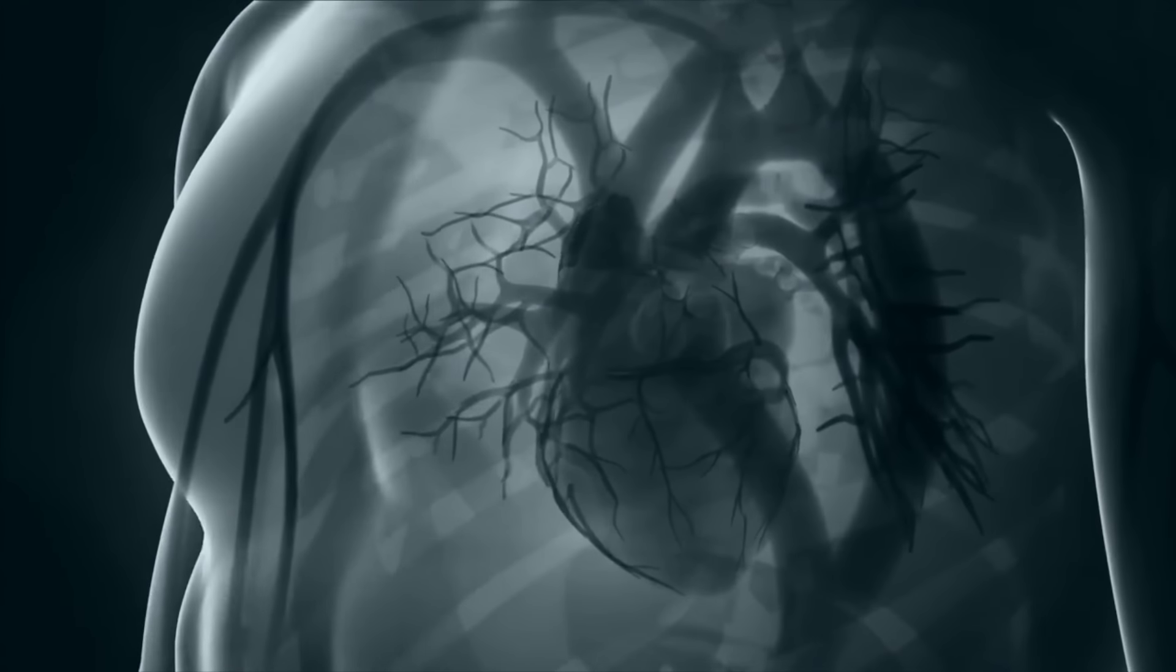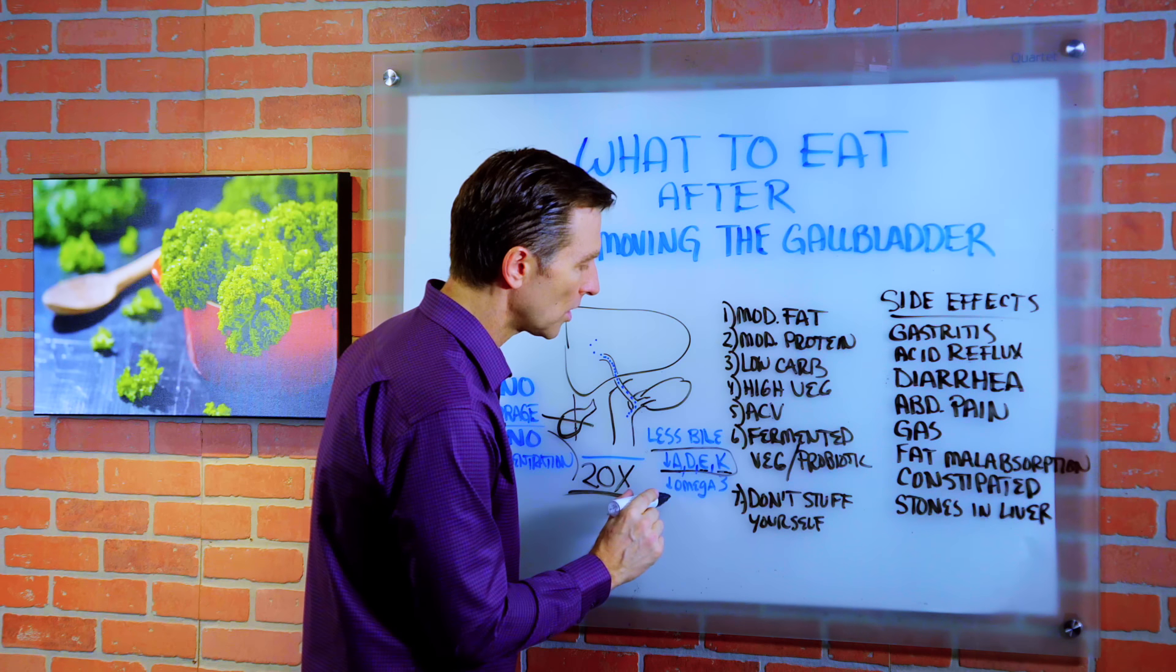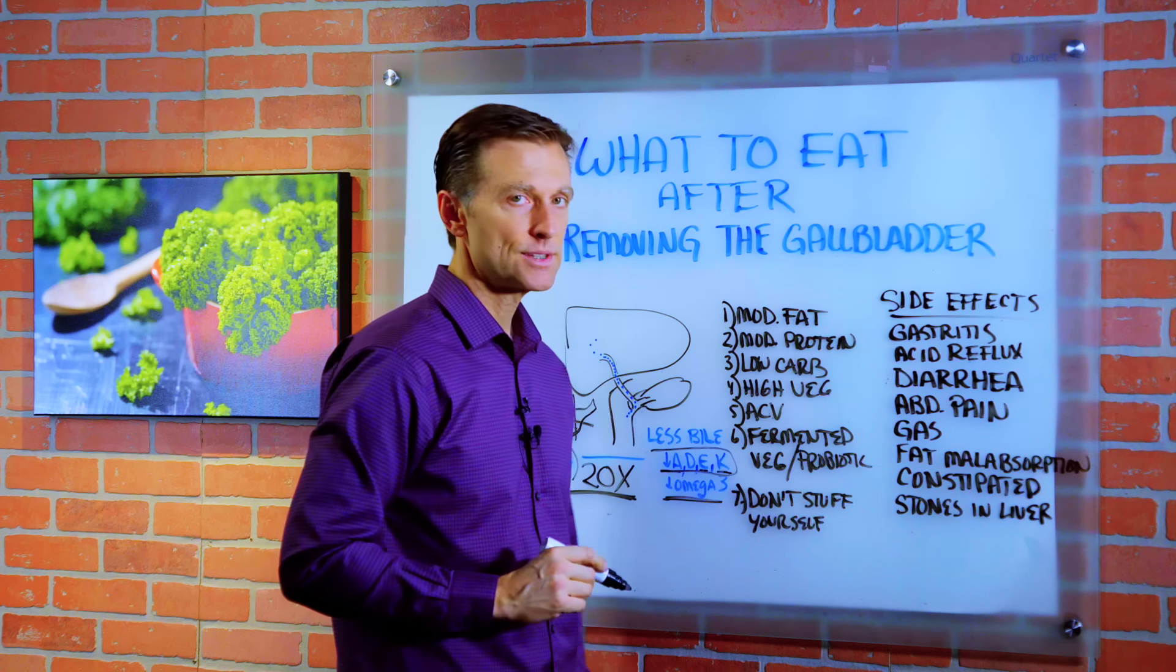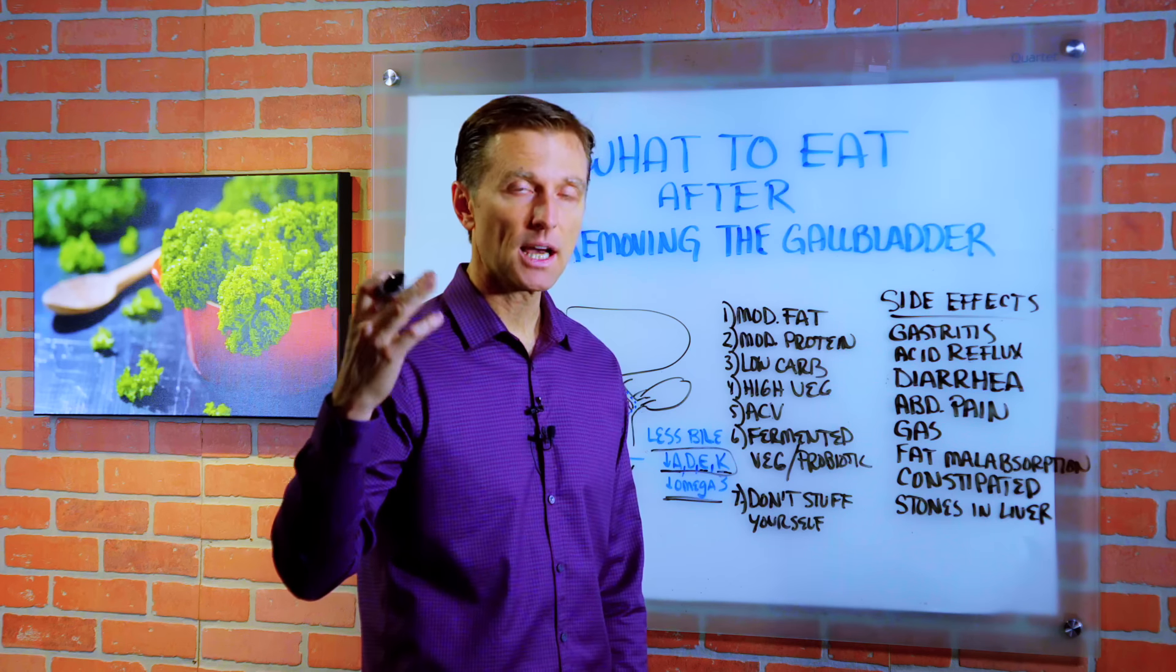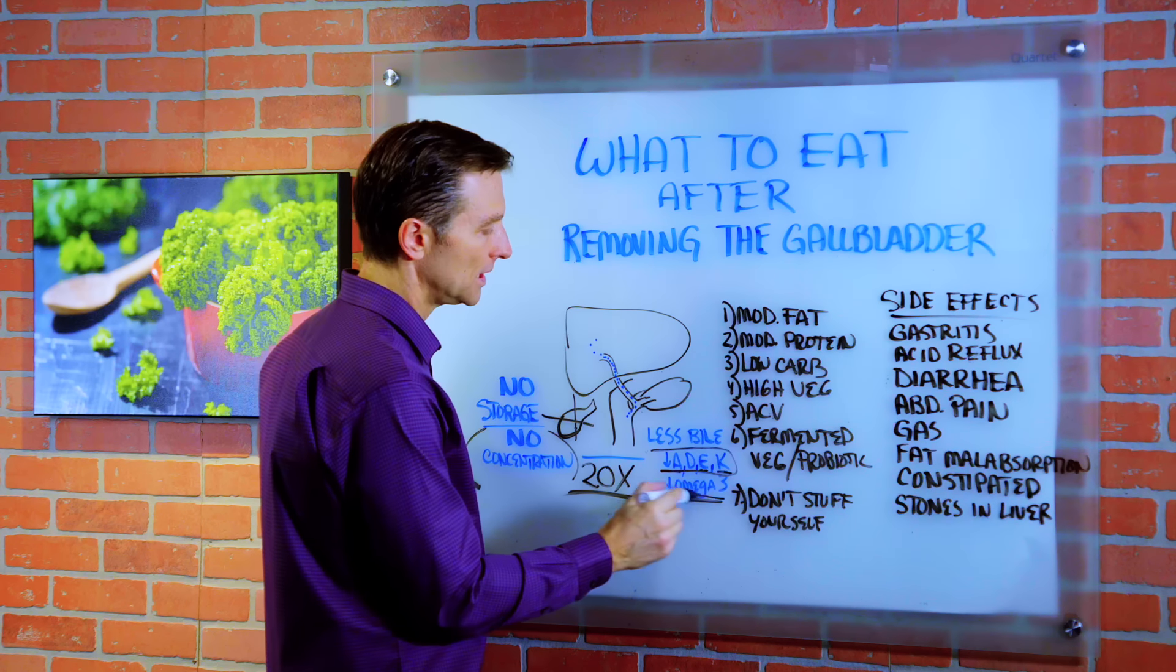So eventually you end up with deficiencies in vitamin A - that's the eyes, sinuses, the immune system. Vitamin D - the bone. Vitamin E - the heart. Even your hair needs vitamin E. Vitamin K.